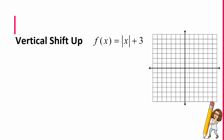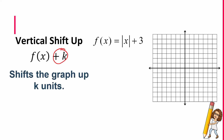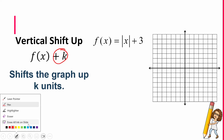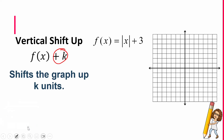The first one I want to talk about is what's known as a vertical shift up. What you will see is it will look like f(x) plus k. So this plus k right here is what we're going to want to focus on, and what this will do is shift the graph up k units. Here is my absolute value function — the parent table.